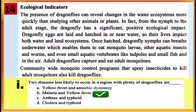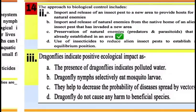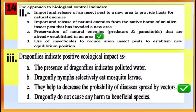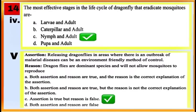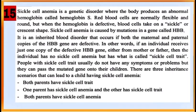Case-based question number 14 provides information about the biological method of control of mosquitoes by using dragonflies. Answer question numbers 1, 2, 3, 4, and 5.